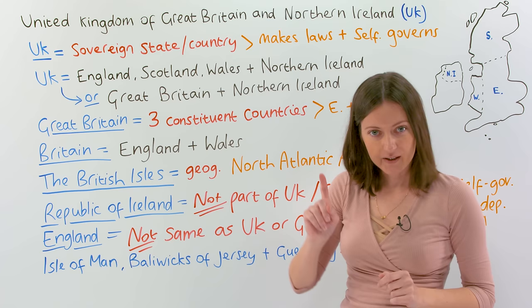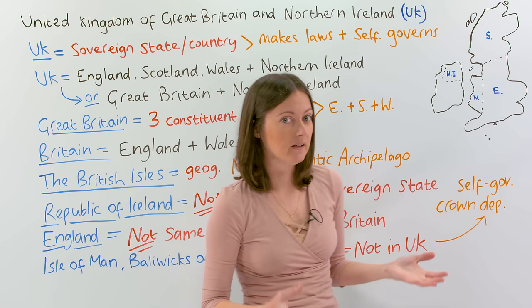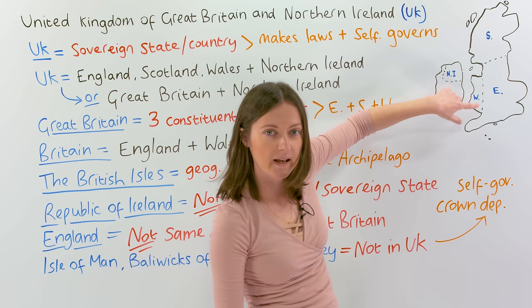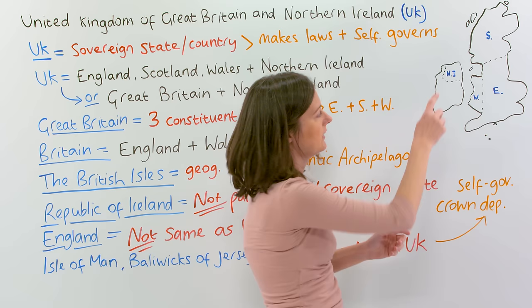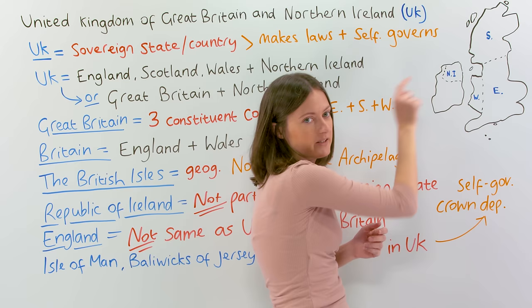Now it gets more confusing because when we're talking about the UK, we can say it's made up of those countries — Scotland, England, Wales, and Northern Ireland. We can also say it's made up of Great Britain and Northern Ireland. Great Britain is this landmass, this island shape here.